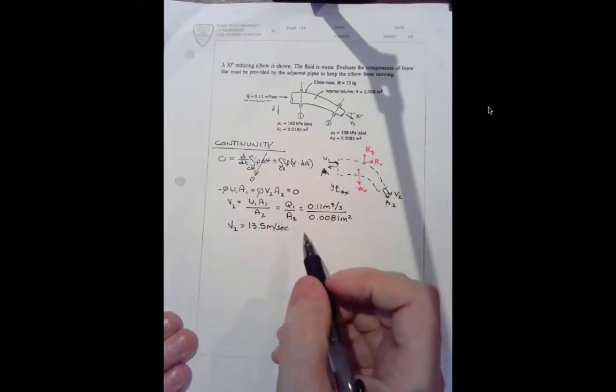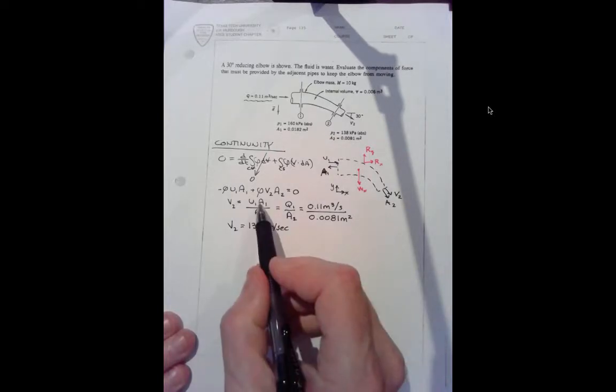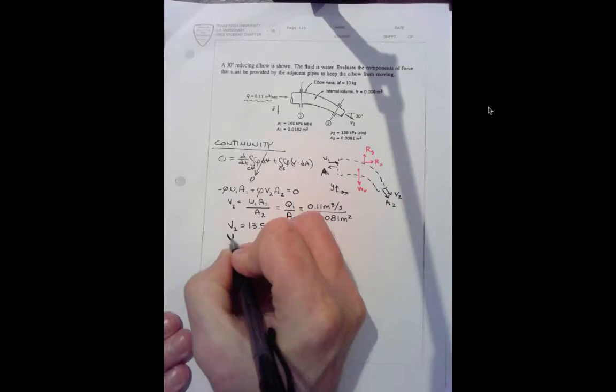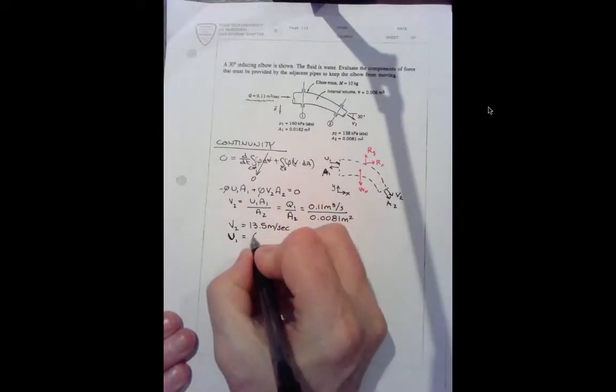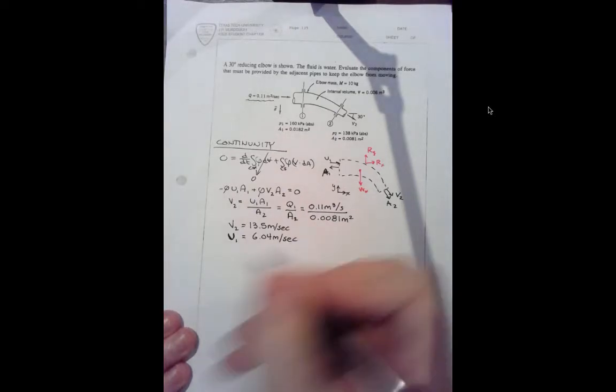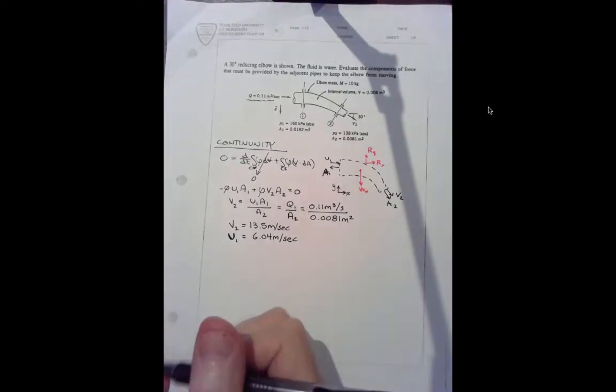And once we know what v2 is we can divide Q by a1 to get what I call u1. Magnitude is 6.04 meters per second. That's about all we can get out of continuity.